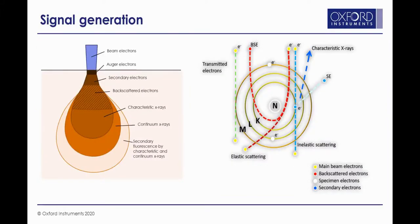These diagrams help explain what happens when the electron beam interacts with a sample. On the left, you can see the beam interacting with a specimen and a range of different signals being emitted from different depths within the sample. These include secondary electrons and backscattered electrons commonly used for imaging, as well as characteristic X-rays — the ones we detect using EDS — and continuum or background X-rays, as well as a variety of other fluorescent signals.